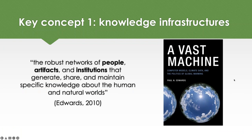This brings us to key concept one: knowledge infrastructures. By knowledge infrastructure, I mean the robust networks of people, artifacts and institutions that generate, share and maintain specific knowledge about the human and natural worlds. I'm taking this definition from Paul Edwards' book A Vast Machine, in which he talks about the knowledge infrastructure of the global climate modeling community. Natural history museums and their data are another type of knowledge infrastructure. This term helps call attention to the fact that neither the specimens, the people, nor the institutions function alone — they all need to work together to produce knowledge.